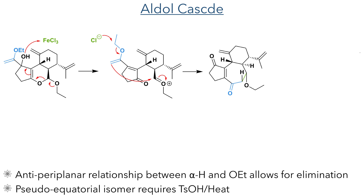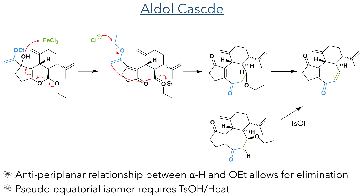This produced two diastereomers. The first, which has an anti-periplanar relationship between the alpha-hydroxyl group and the ethyl ether, undergoes spontaneous elimination to form the seven-membered dienone, whereas its other diastereomer with a pseudo-equatorial relationship between the alpha-hydroxyl group and the ethyl ether requires heat with tosylic acid to promote this elimination.